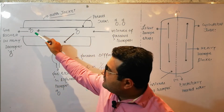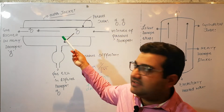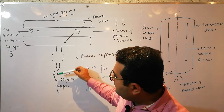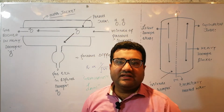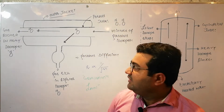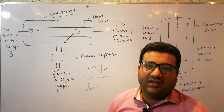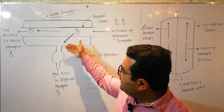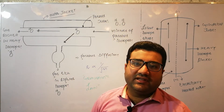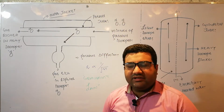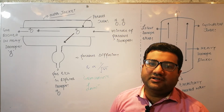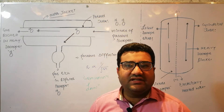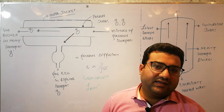The heavier isotope, oxygen-18, will not be able to pass through these porous plates. The lighter isotope will pass through the porous tube and be collected in a separate chamber, while the heavier isotope because of its lesser rate of diffusion will remain in the residual gas as oxygen-18. This separation takes place due to the difference in the rate of diffusion of the two isotopes. This method is used to separate isotopes of oxygen, neon, and even uranium.